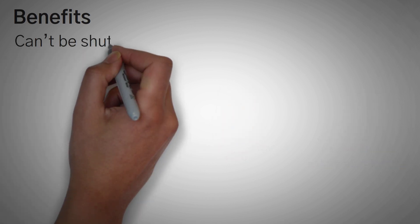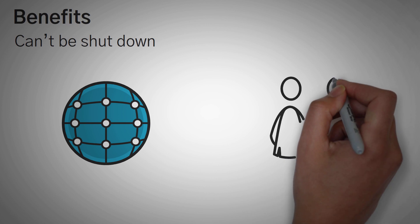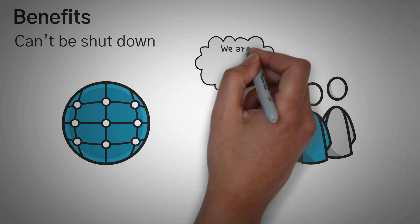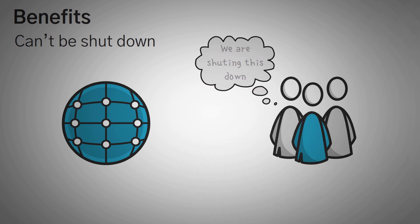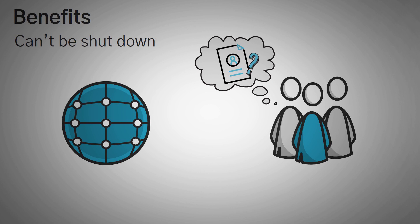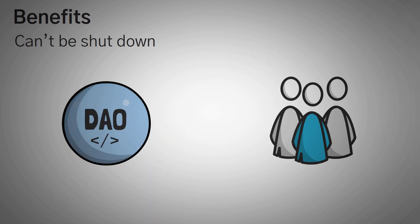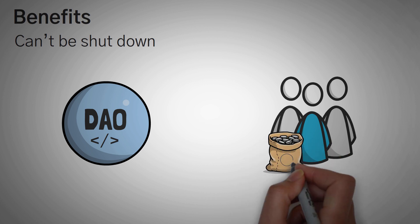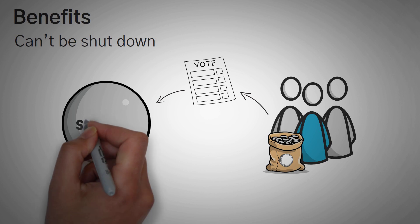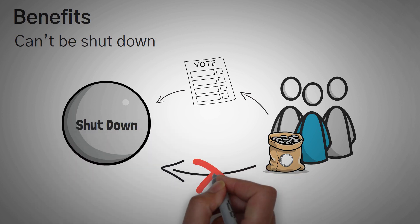Another benefit is that DAOs cannot be shut down. In the case of major corporations, the CIA, the FBI, or any major government service can technically step in and say they're shutting you down, or demand all the information you have on someone — and if you're in the United States, you'd be forced to comply. In a DAO, the only way they could make this happen is if they had a very large amount of tokens, submitted a proposal to be voted on, and went through the voting process fairly. In other words, a government cannot skip the line.